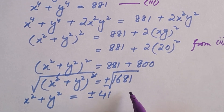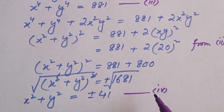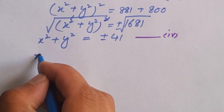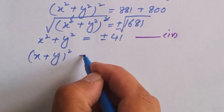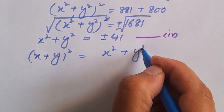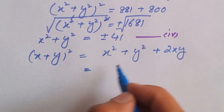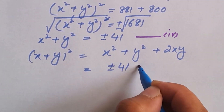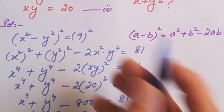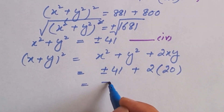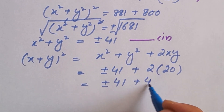We are going to name this as equation 4 and save it for later. Right now, since we have to find the value of x plus y, we are going to use the identity (x plus y) whole squared, which is equal to x squared plus y squared plus 2xy. Substituting the value of x squared plus y squared from equation 4, which is plus or minus 41, plus 2 times xy, and we know xy equals 20 from equation 2.